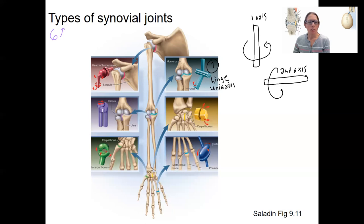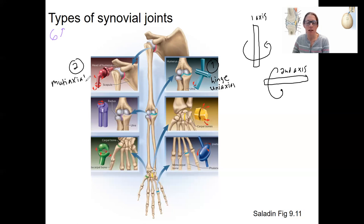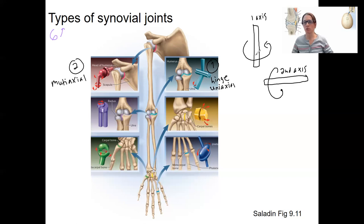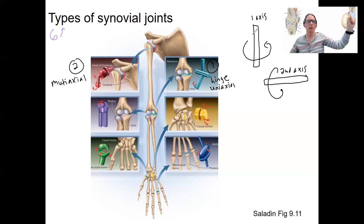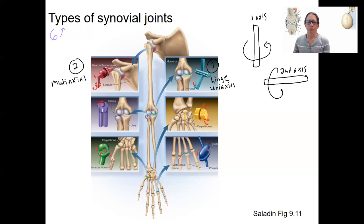Then there are joints that can move in many axes — a multi-axial joint. Your shoulder and your hip can move around many different planes. This type is called ball and socket, and it's super mobile — multiple axes of movement.